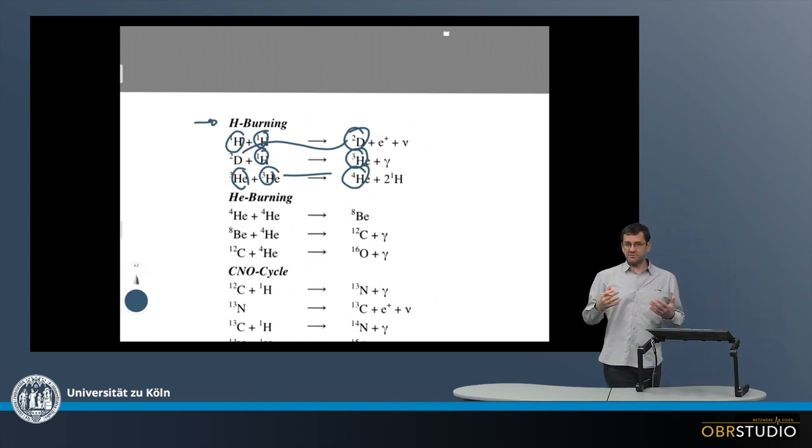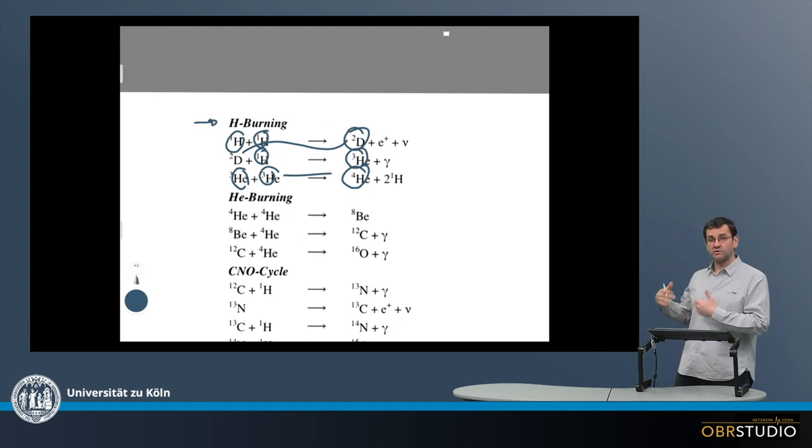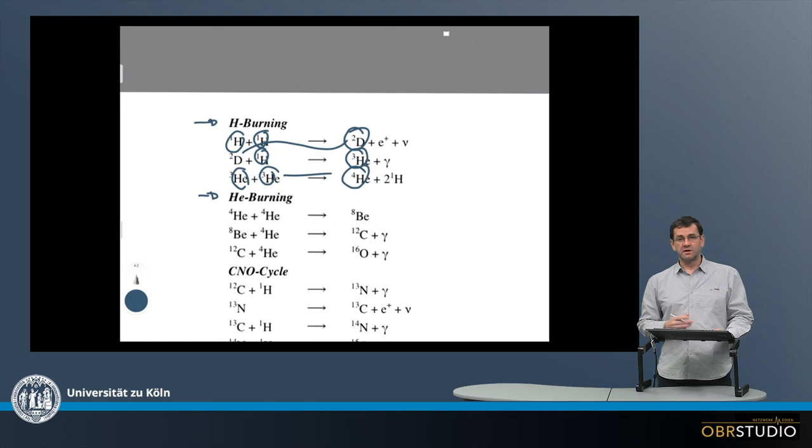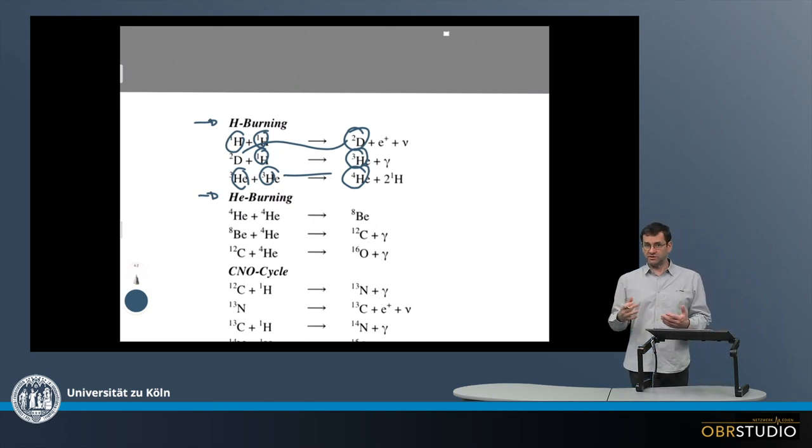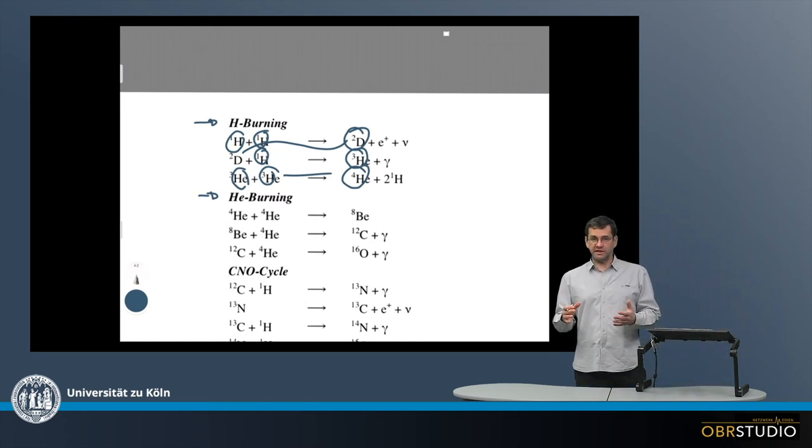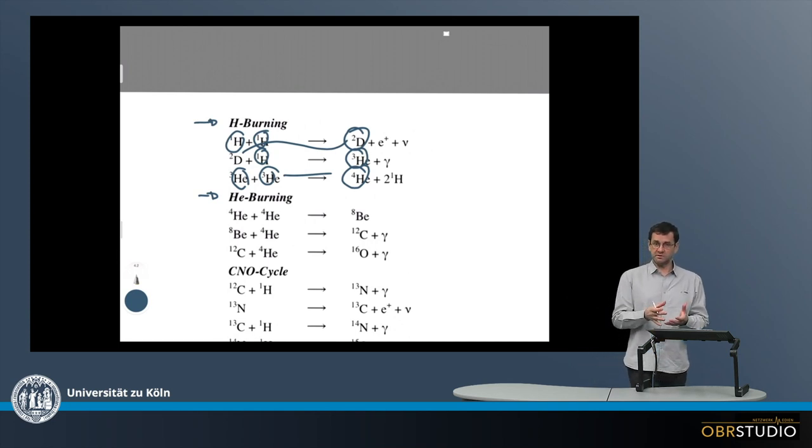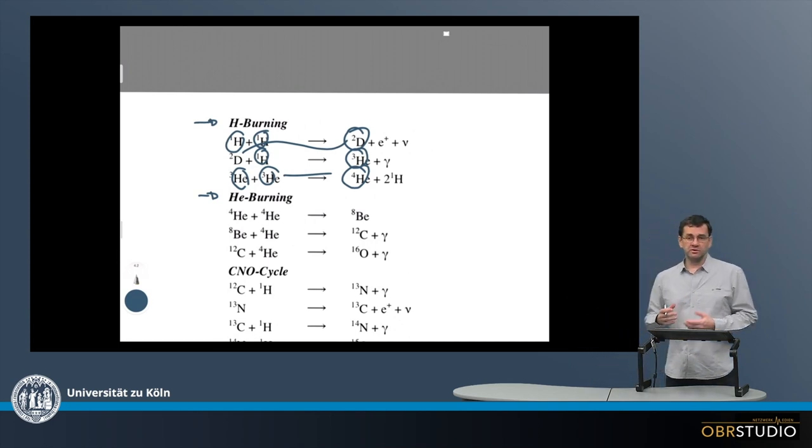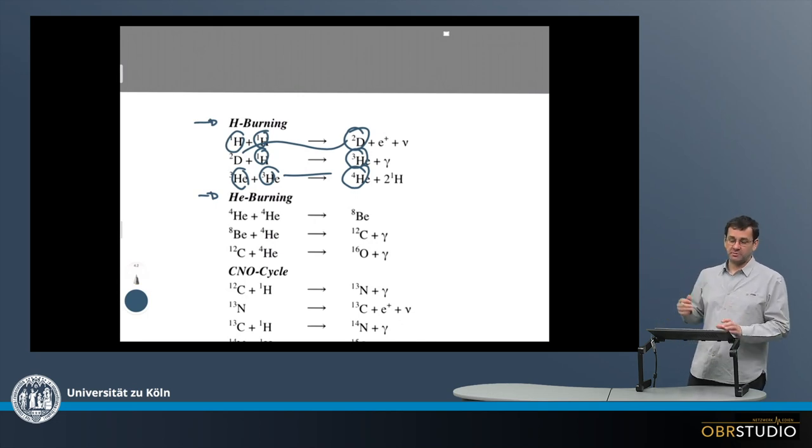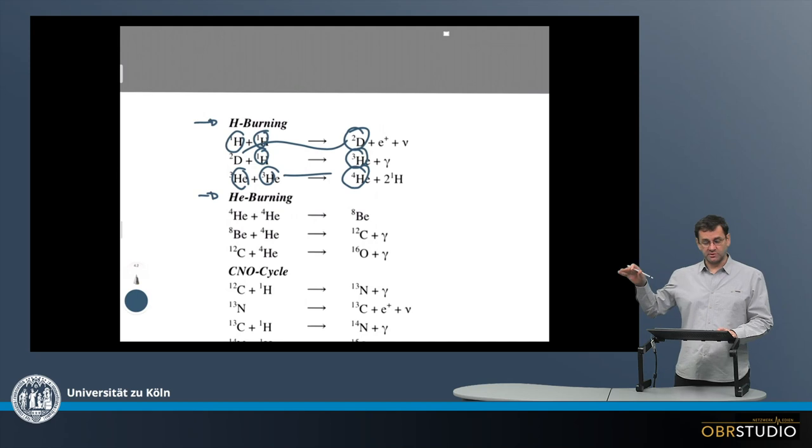And after these first fusion steps producing helium, the helium can be used to go to the next burning stage, which is then the helium burning. And for example, our sun will reach helium burning, but this will then be the end. Our sun is simply too small to increase the pressure sufficiently to produce even heavier elements.